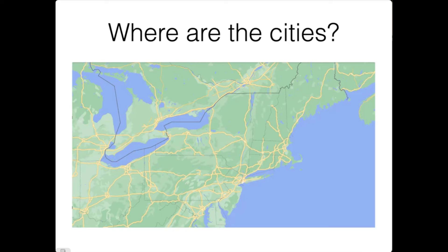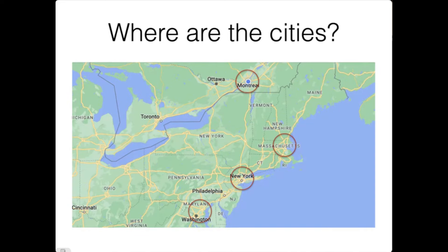If I had to ask you where the cities are, what you would probably guess is they're probably where the highways intersect. So if I look for intersections of highways and circle them, what you find when I put the labels back is indeed these circles correspond to Montreal, Boston, New York, Washington DC, for instance.